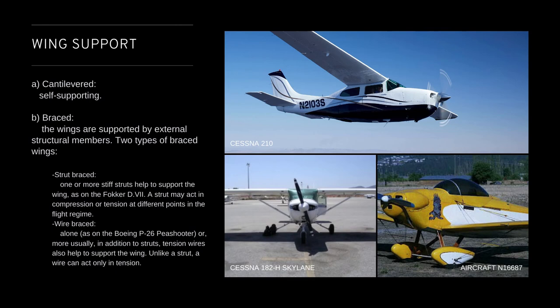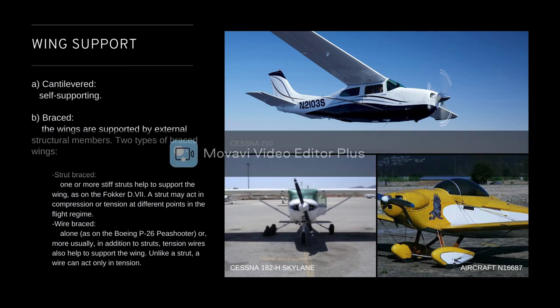There are two types of braced wings. The first type is the strut brace, where one or more stiff struts help to support the wing, as on the Fokker D.VII. A strut may act in compression or tension at different points in the flight regime.